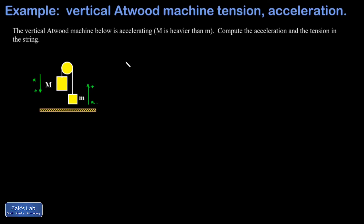Then I'll diagram all the forces acting on each moving piece and apply Newton's second law to each of the masses. The tension in the string is the same everywhere, provided it's a light string, a light pulley, and a frictionless pulley. I'm going to show the tension pulling up on big M and pulling up on little m — both are unknown. A really common mistake is to say T equals mg, but if that were true there wouldn't be any acceleration because the forces would be balanced. So T is an unknown that will be solved for in the system of equations.